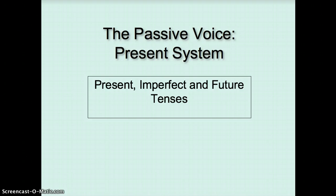This presentation is on the passive voice, present system, and it includes the present, imperfect, and future tenses. It corresponds to your textbook, Oxford Latin, Chapter 32.